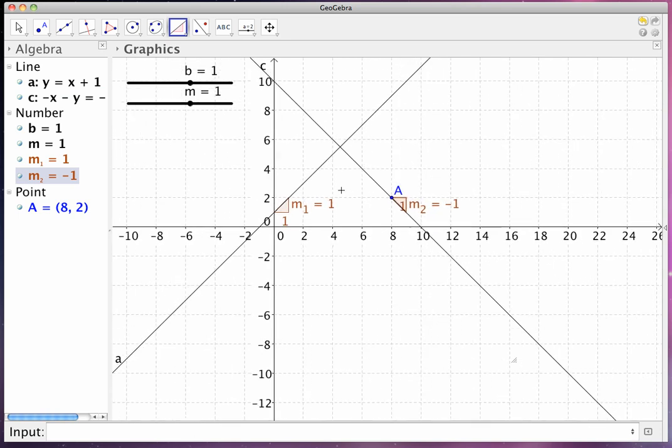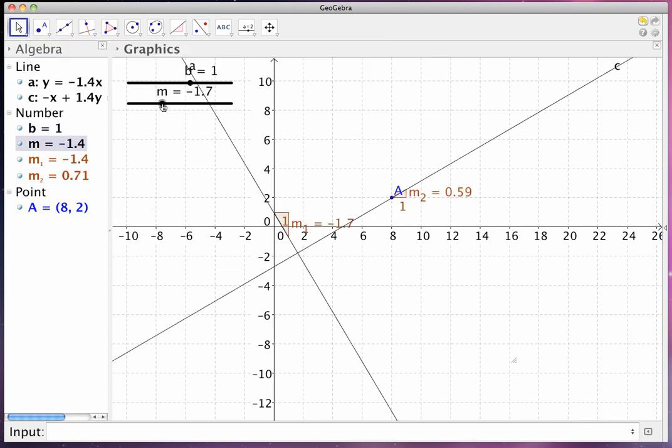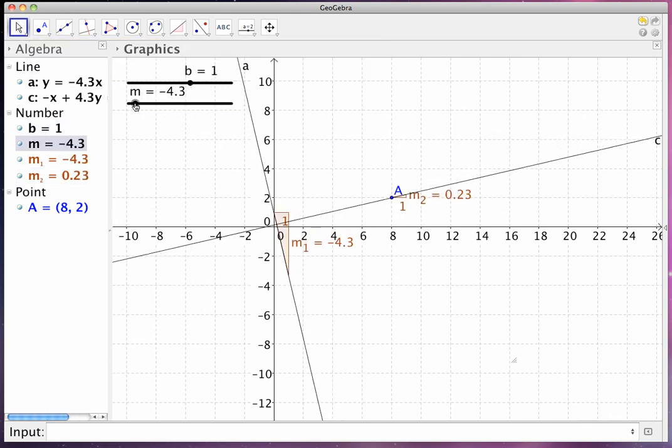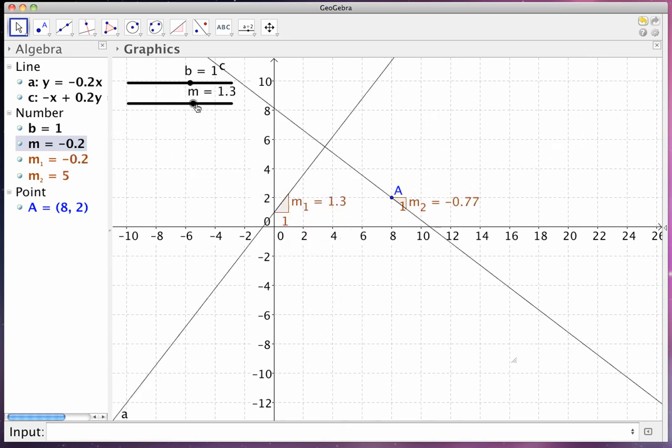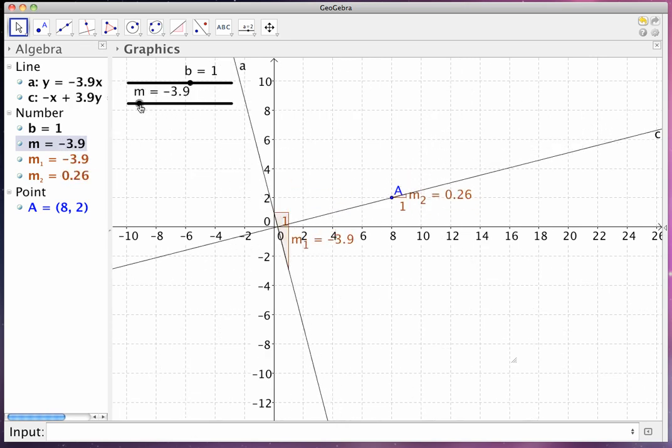But then what you could do, very powerful, turn that into a moving device again. You can change the slope of your original line and you can see what happens to the slope of the perpendicular line in relation to that line.